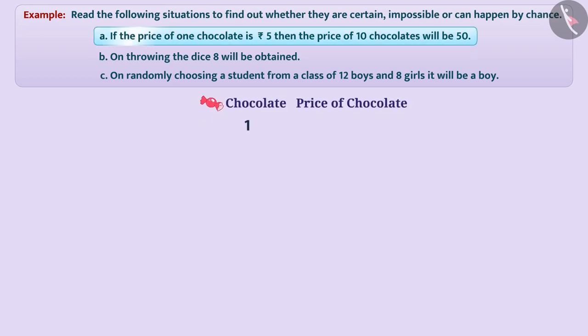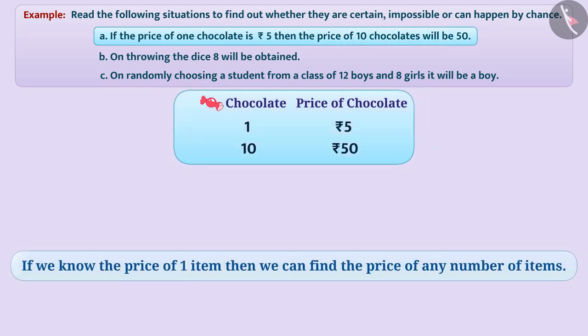If the price of one chocolate is Rs 5, then the price of 10 chocolates will be 50. If we know the price of one item, then we can find the price of any number of items. Here, considering the price of one chocolate, it can be said certainly that the price of 10 chocolates will be 10 multiplied by Rs 5 equals Rs 50. Therefore, the outcome of this event is certain.